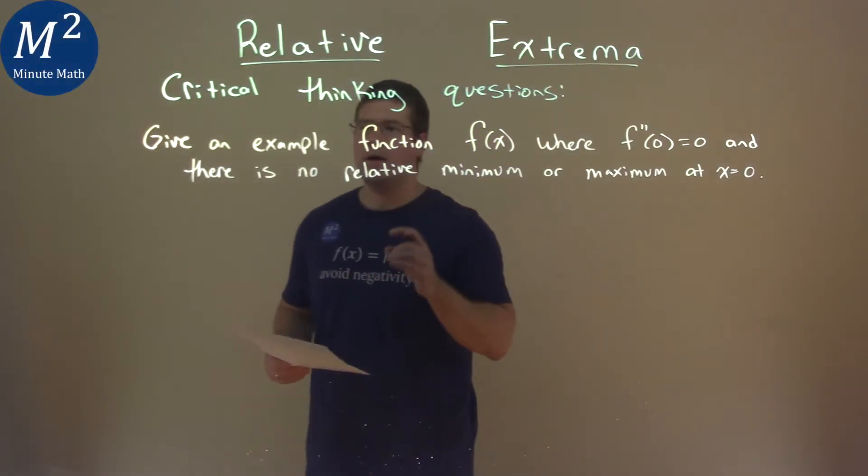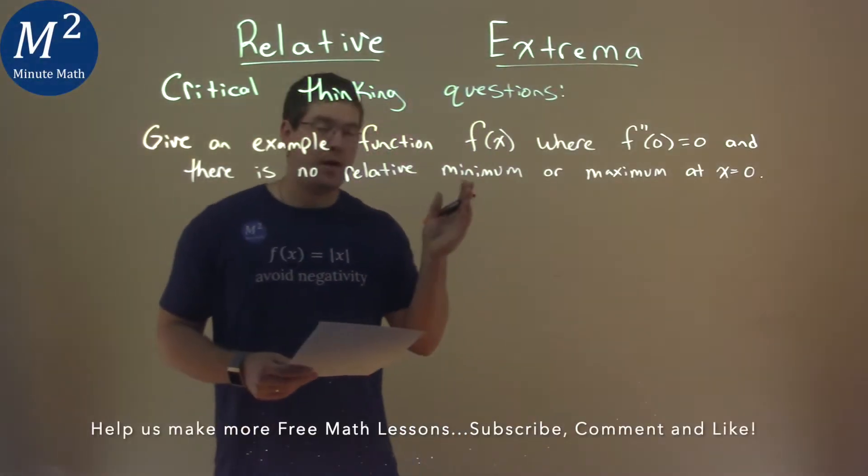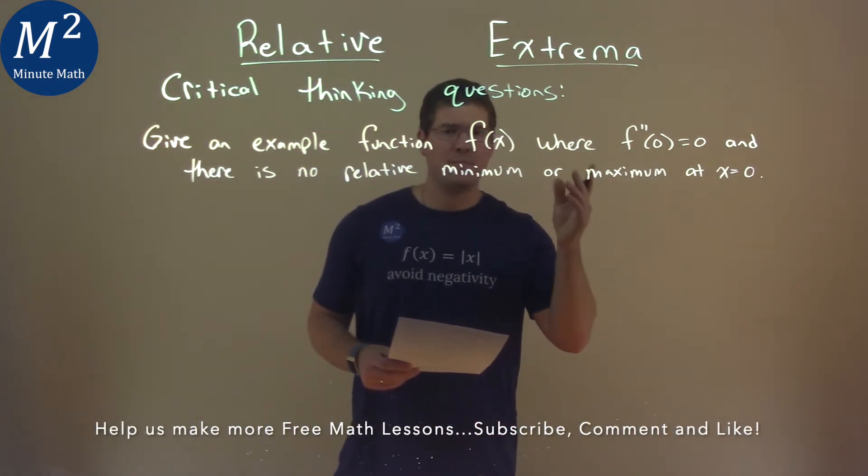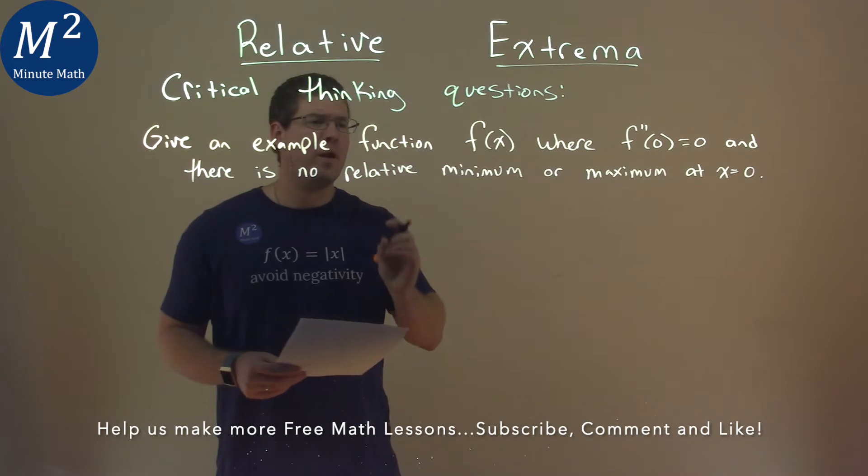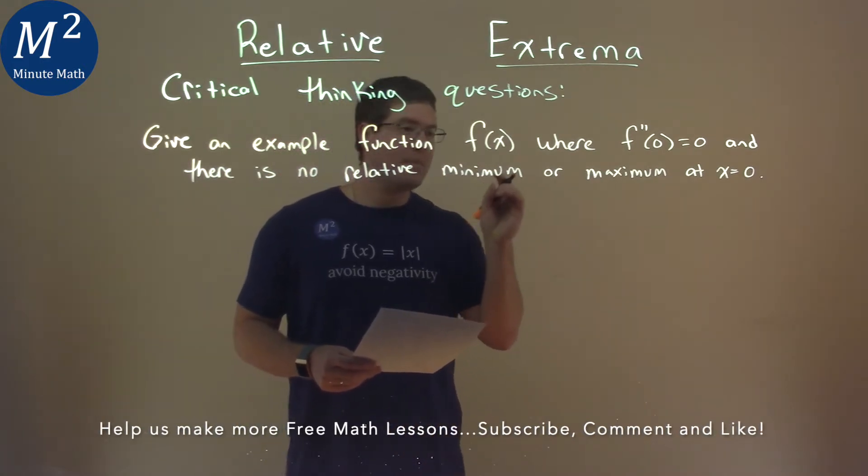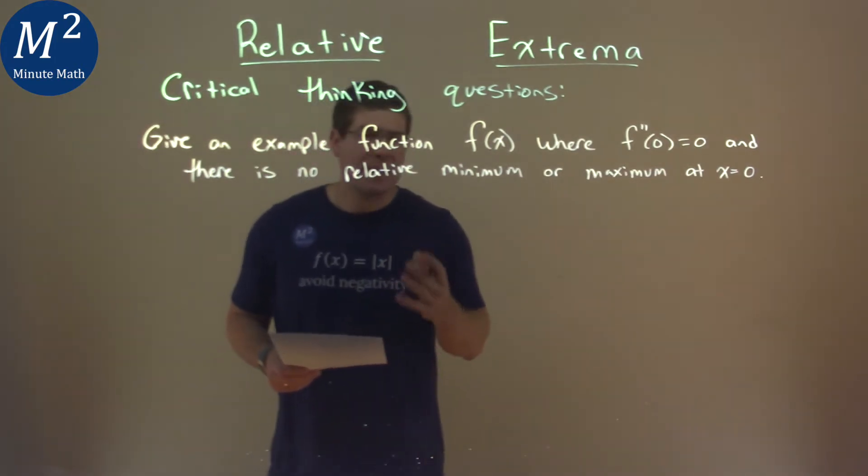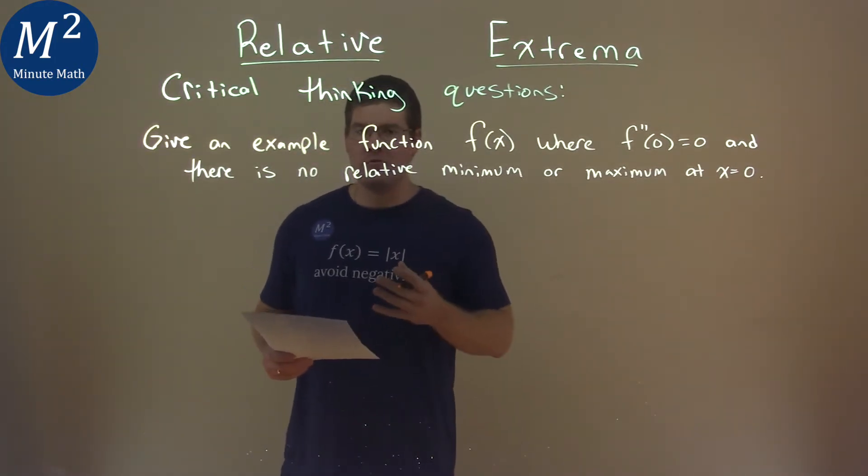We're given this problem right here: give an example function f(x) where f double prime of 0 equals 0, and there is no relative minimum or maximum at x equals 0. So this one actually has many answers to it.